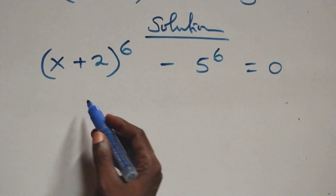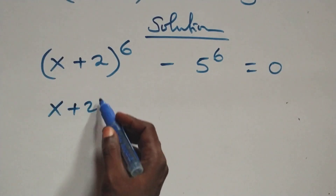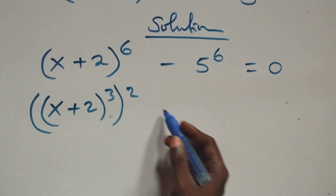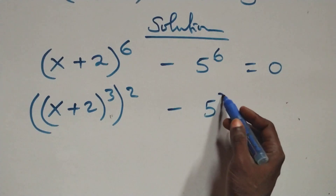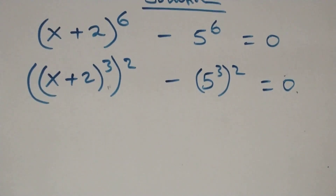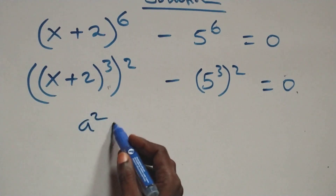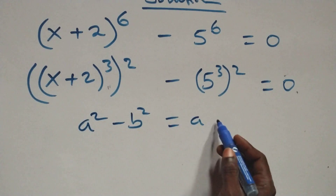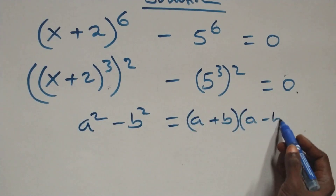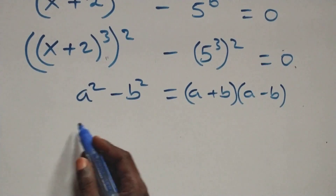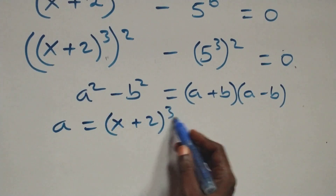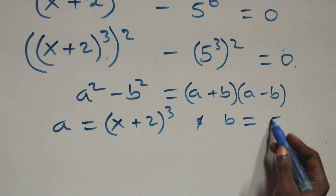Then the next step, we can write this as (x + 2) raised to the power 3, then raised to the power 2 — as 2 times 3 gives us 6 — minus also here we have 5 raised to the power 3, then raised to the power 2, which is equal to 0. This follows from a squared minus b squared, which can be written as (a + b) into (a − b), where a is (x + 2) raised to the power 3 and b is 5 raised to the power 3.